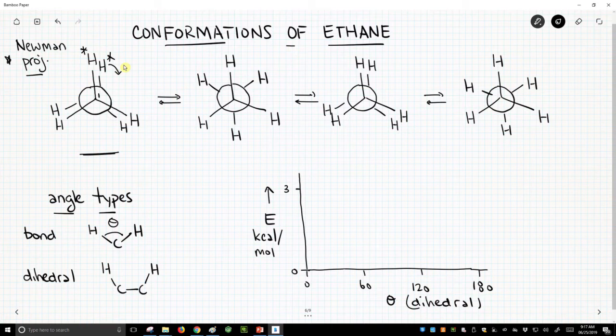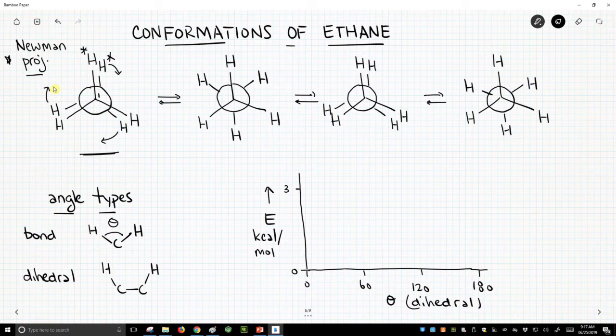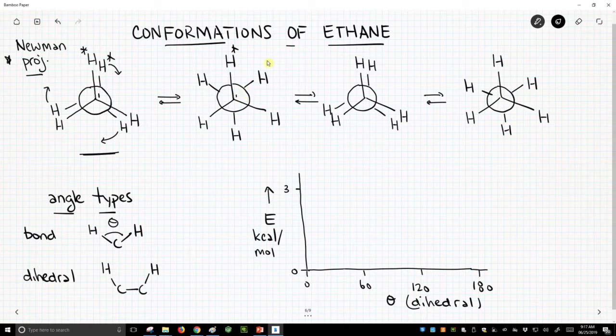That hydrogen is going to move. This hydrogen, which is also on carbon-2, is going to move, and that hydrogen is going to move. The front carbon hydrogens are going to stay fixed. So here is the same hydrogen on carbon-1. This is now where that hydrogen on carbon-2 landed, and we're rotating by 60 degrees, and we get a new Newman projection.